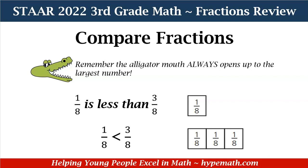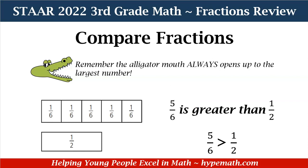Even in our picture, we can see that 1 eighth is smaller or less than 3 eighths. Let's look at another example. Here we have 5 sixths is greater than 1 half. Even though our numerators and denominators are different, we can look at our pictures and we can see there are 5 equal blocks and our denominator is 6. And we also have 1 half. In looking at our blocks, we can see that 5 sixths is greater than 1 half.